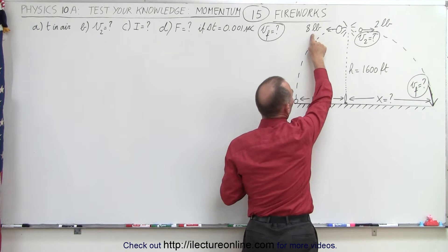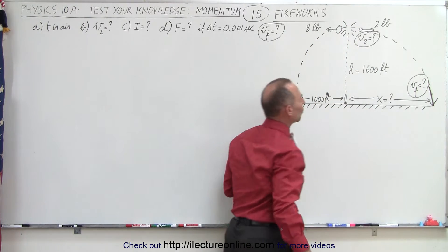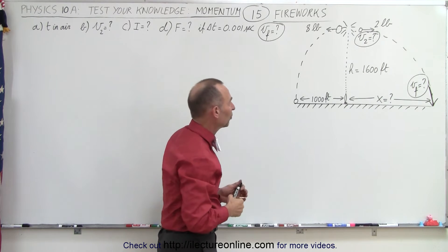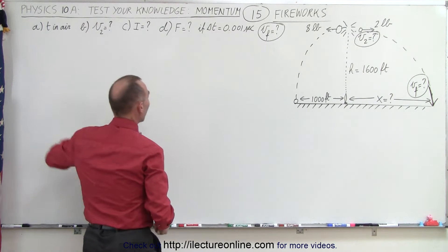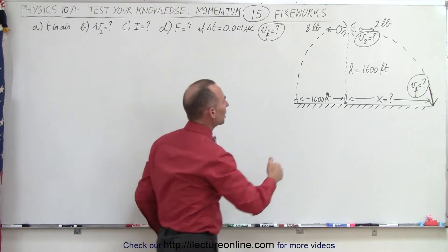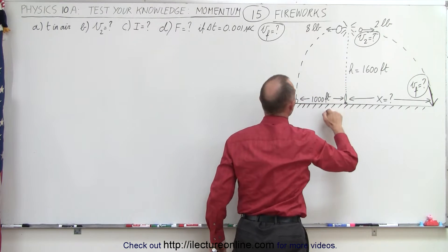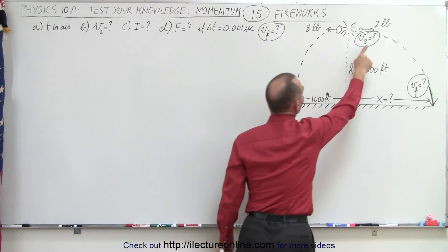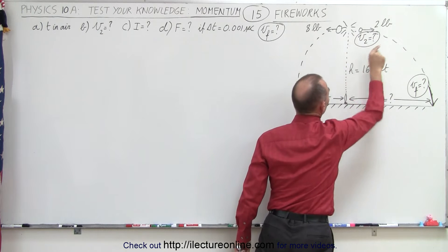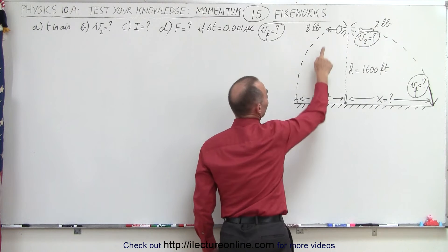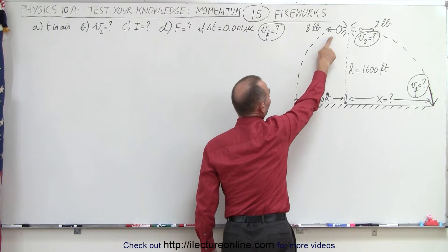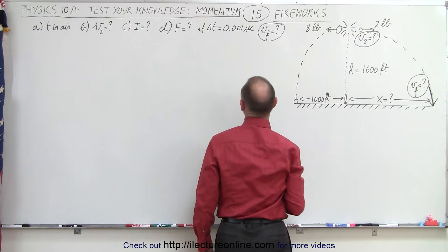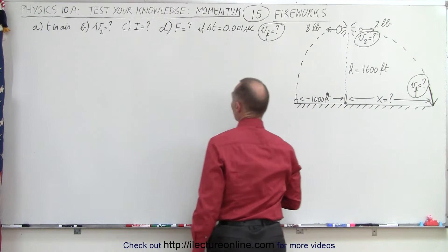The piece on the left has a weight of eight pounds. The piece on the right has a weight of two pounds. First of all, how long will it be before the pieces fall back down to the ground? Secondly, what is the velocity of the two-pound piece being shot to the right? Notice that the left piece, the eight-pound piece, will reach a distance of 1000 feet and it returns back to the ground.